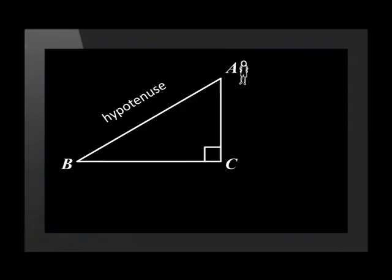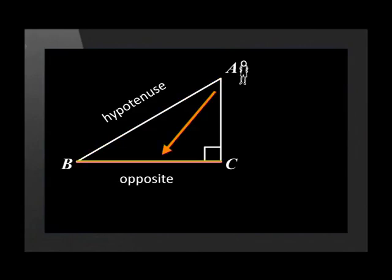Remember we said that trigonometry is about relationships between sides and angles. Let's see what happens to the relationship if we picture ourselves standing at angle A. The hypotenuse is always the line that is opposite the right angle. Line BC is opposite to angle A, and line AC is adjacent to angle A.